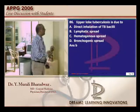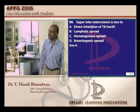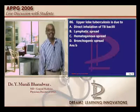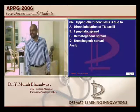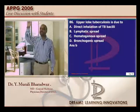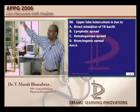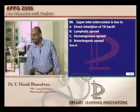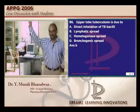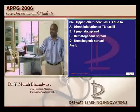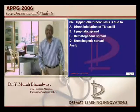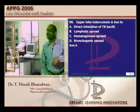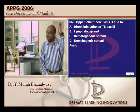Upper lobe tuberculosis — is it due to lymphatic or hematogenous spread? This is a challenging question. Hematogenous spread is one answer. Two reasons are cited for why post-primary tuberculosis commonly affects upper lobes: number one, there is high oxygen tension there — mycobacteria happily enjoy it; number two, the upper lobes have diminished lymphatic drainage compared to the middle and lower lobes, so organisms cannot be drained out and hence remain.